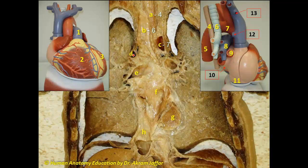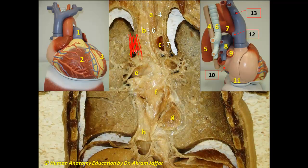D is another arch above the root of the right lung. C, the arch of the aorta, is an arch on the left side above the root of the left lung, and D is an arch above the root of the right lung. This is the arch of the azygous vein. The arch of the azygous vein arches from behind forwards over the root of the right lung and drains into the superior vena cava. The superior vena cava receives the arch of the azygous vein. Therefore, D matches with 12.